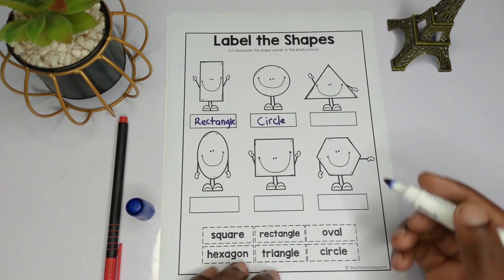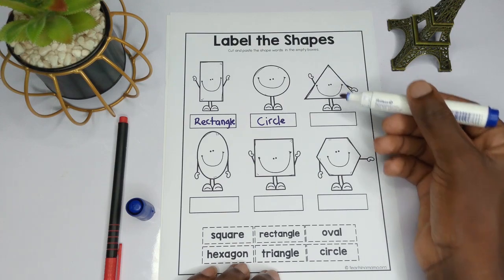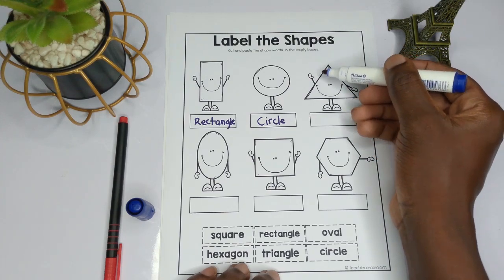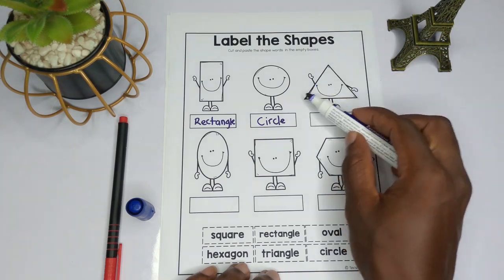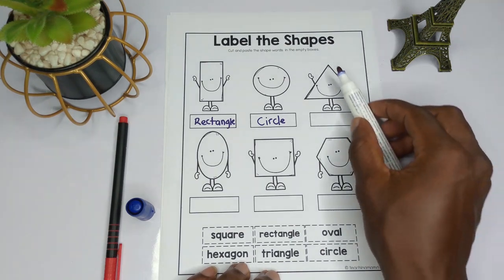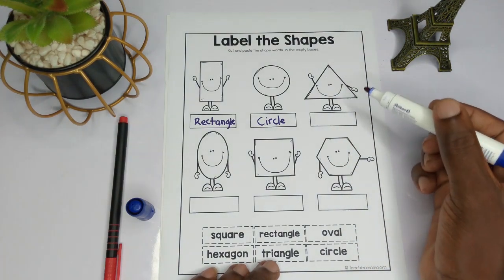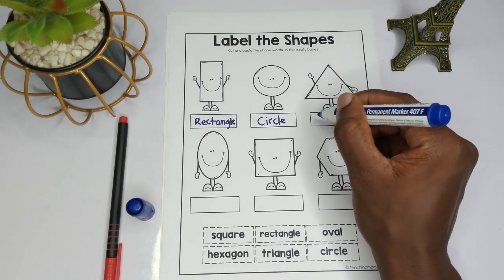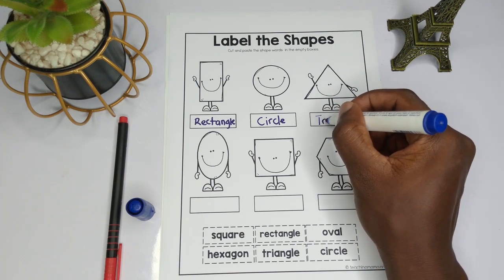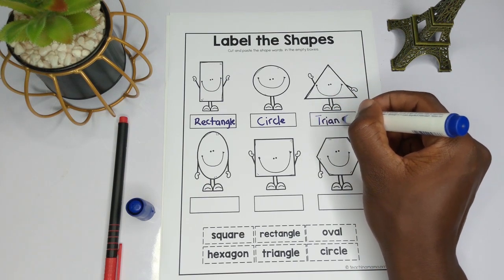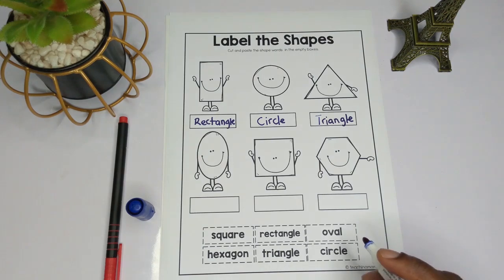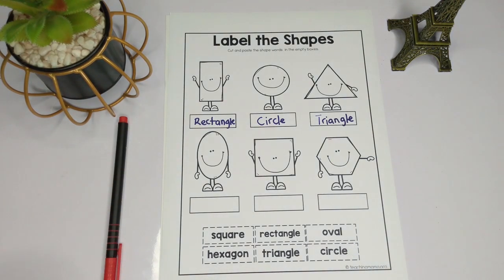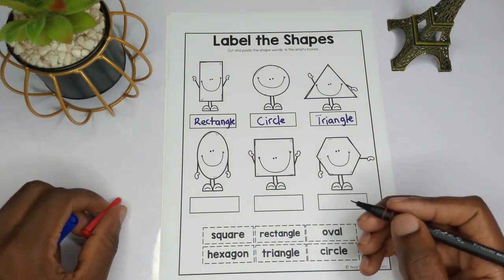The next shape has three sides — one, two, and three. It looks like a pyramid. This shape is what we call a triangle — t-r-i-a-n-g-l-e. So this shape is what we call a triangle.